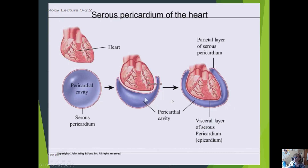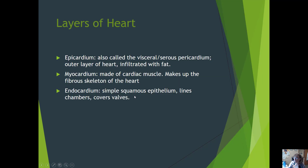This diagram shows how the heart sits in the pericardial cavity and how it is in contact with the serous pericardium. The parietal layer is on the outside, and the visceral layer is the one actually touching the heart. That visceral pericardium can also be called the epicardium, or the outermost layer of the heart.